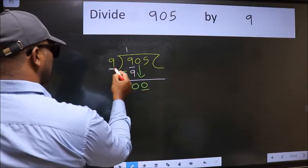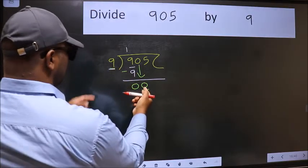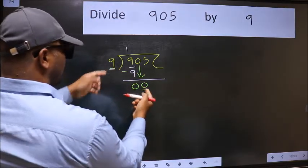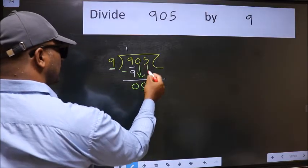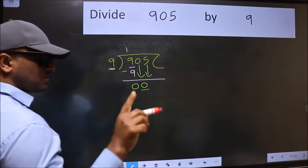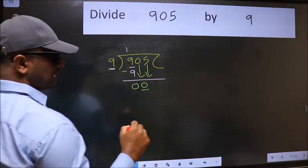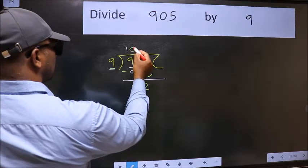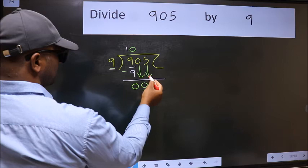Here we have 0 and here 9. 0 is smaller than 9, so we should bring down the second number. And the rule to bring down the second number is we should put 0 here. Then only we can bring this number down.